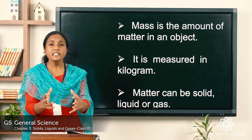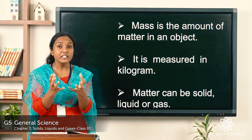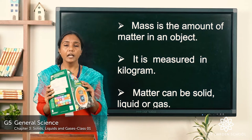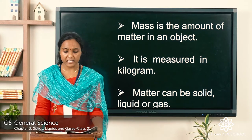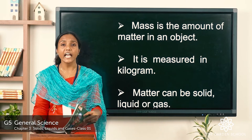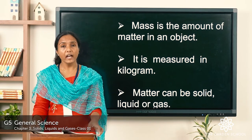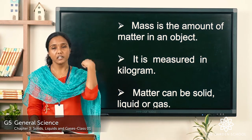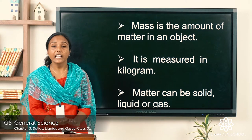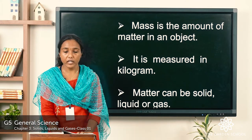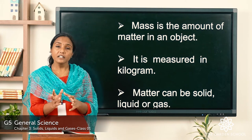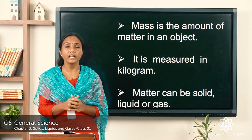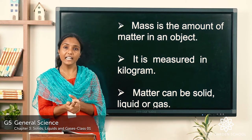Mass is the amount of matter in an object. For example, a book occupies space and it has a mass — it has a weight. So mass is the amount of matter in an object, and it is measured in kilograms. Now, matter can be of three forms: solid, liquid and gas.